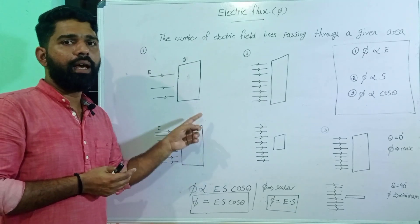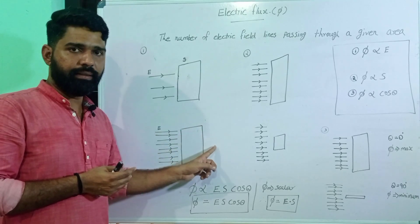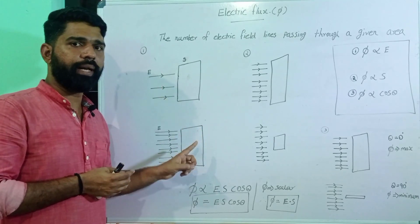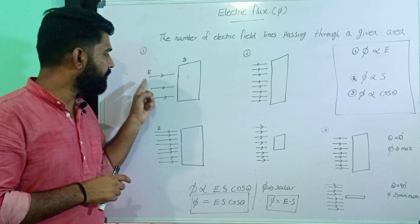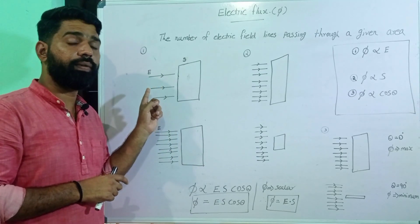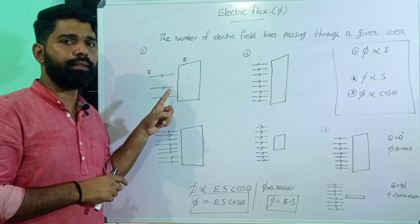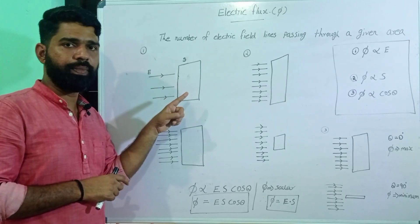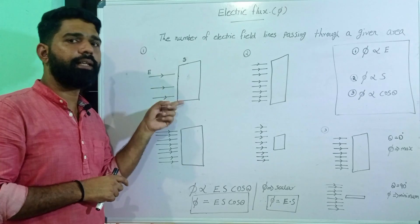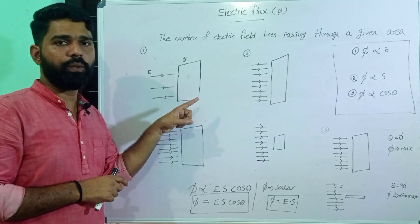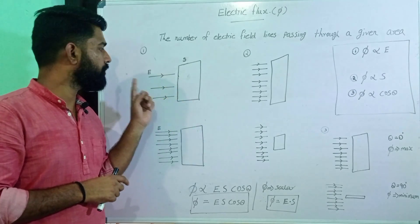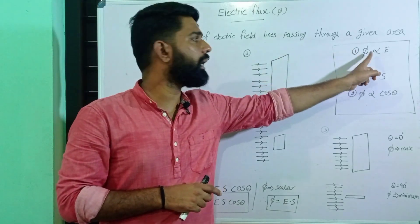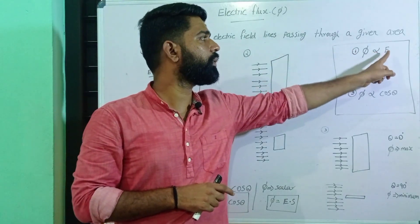That means the flux is higher in this case. So electric flux depends on the numbers of electric field lines. Numbers of electric field lines increase, flux increases. Numbers of field lines decrease, flux decreases. So the flux is directly proportional to the electric field lines — flux phi is directly proportional to electric field E.